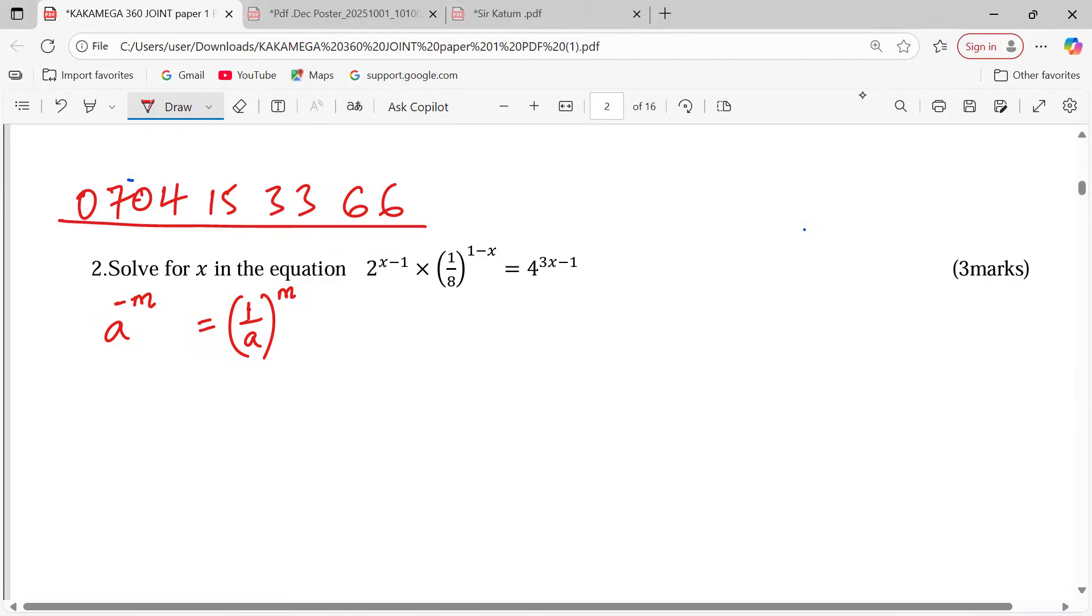So this law can be applied in any direction. We can change a statement towards the right or left hand side, meaning that we can write this expression as 2 raised to x minus 1 multiplied by, instead of 1 over 8, we make it 8. Then now the power multiplies by negative 1. The power is now multiplied by negative 1 like that. Then this is equal to 4, 3x minus 1.